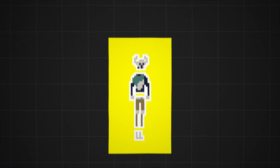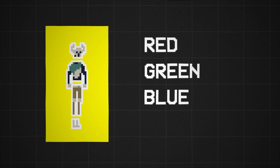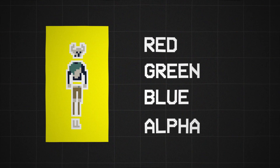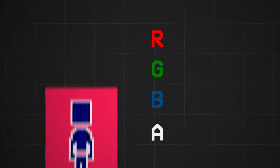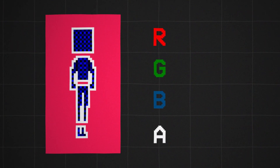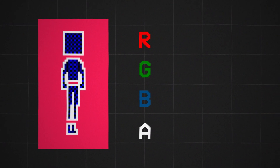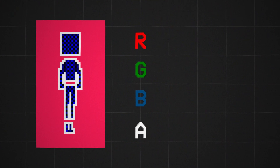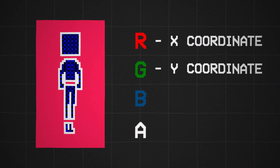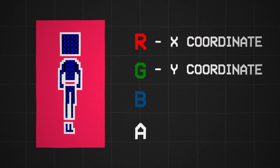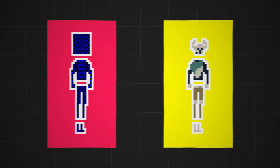Sprites are made up of pixels, which are just a red, green, blue, and alpha channel. Since shaders read the RGBA channels for each pixel on a sprite, I can use the RG channels on a map sprite to represent an XY coordinate on a texture sprite. Then apply the color from the texture to the map.